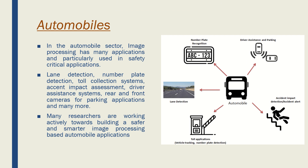When it comes to automobiles, the simplest application we can immediately cite is number plate recognition, followed by driver assistance systems — which include simple parking applications to the most complex applications that assist drivers in safe driving and can avoid collision with nearby vehicles through front and rear cameras. Lane detection is another application that helps in detecting lanes properly, and toll applications where your number plate gets recognized and the account is automatically debited for toll crossing and accident impact detection.